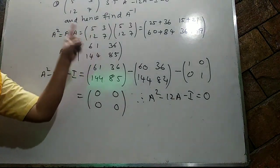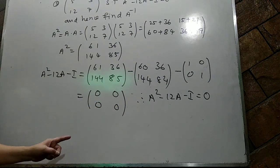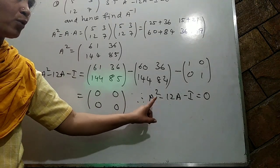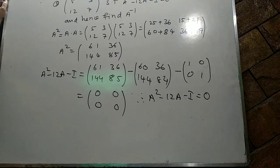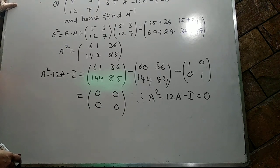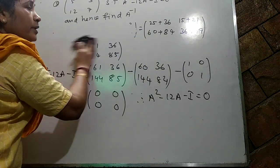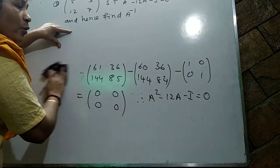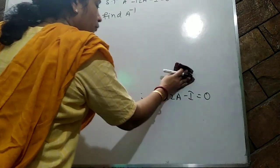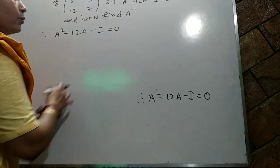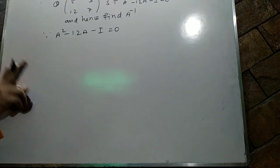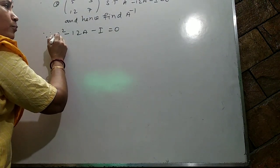Now, 'and hence find A inverse' means using this result — not elementary operations. Pre-multiply both sides by A inverse: A inverse times (A² minus 12A minus I) equals 0. Opening the bracket: A inverse A² minus 12(A inverse A) minus A inverse I equals null matrix. Since A inverse A equals I, we get A minus 12I minus A inverse equals 0.